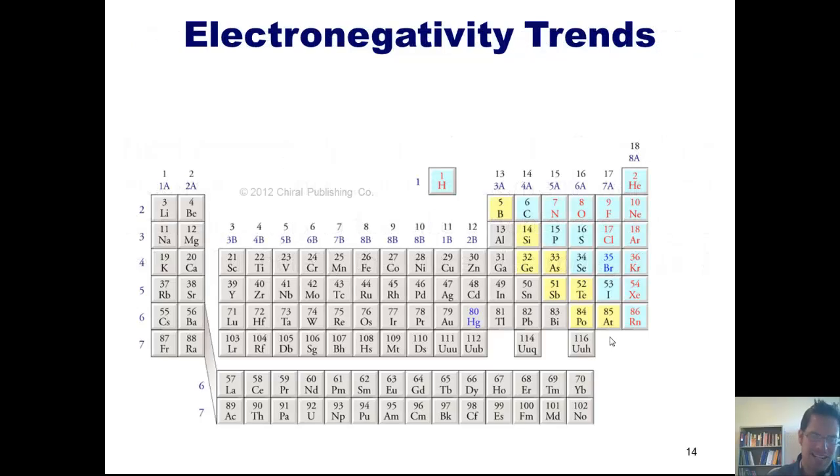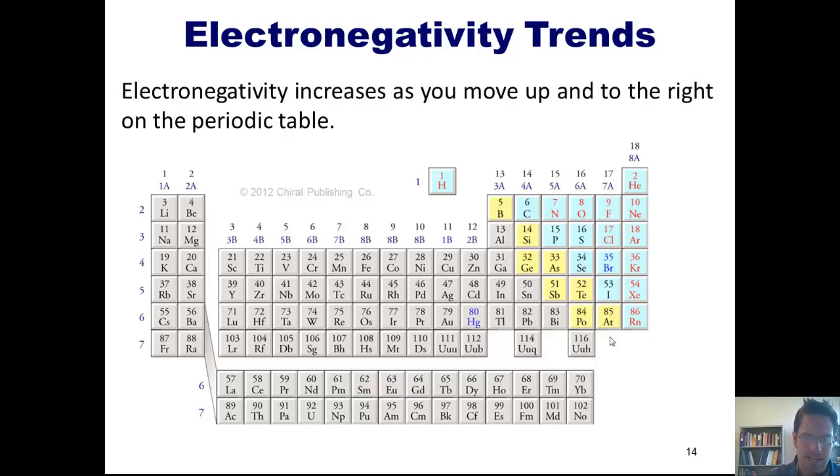Now, one thing that I demand of you, my students, is that you remember that electronegativity increases as you go to the right and up on the periodic table. Noble gases are excluded from this generalization. Why, you ask? Well, I'll explain that in a later chapter. For now, I just want you to remember this fact: electronegativity increases as you go to the right and up on the periodic table.